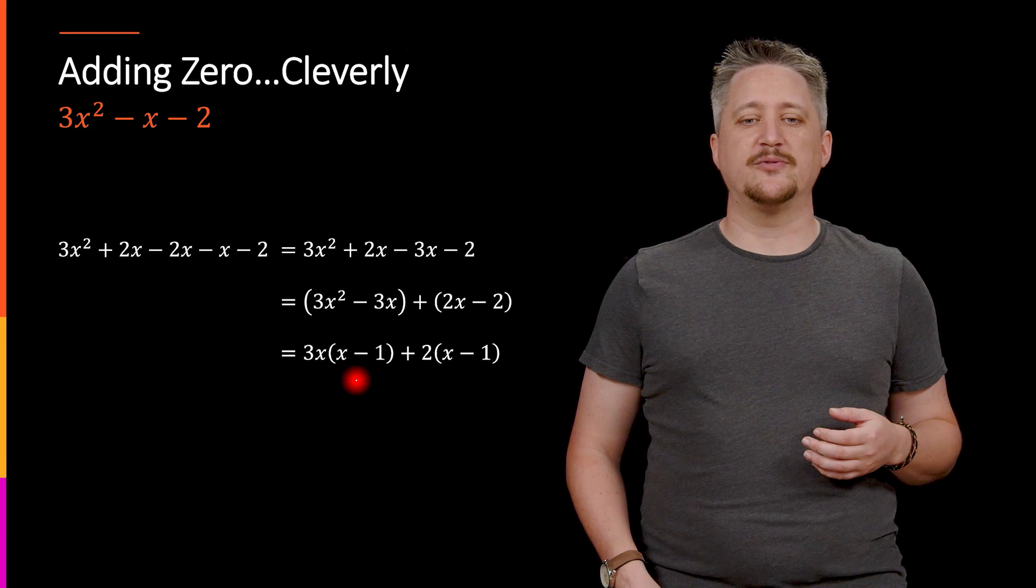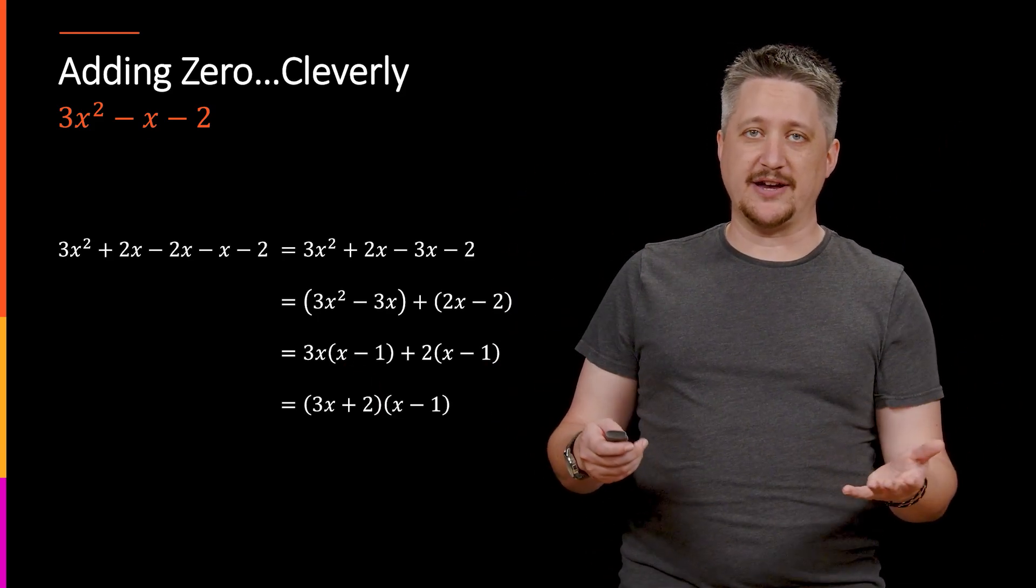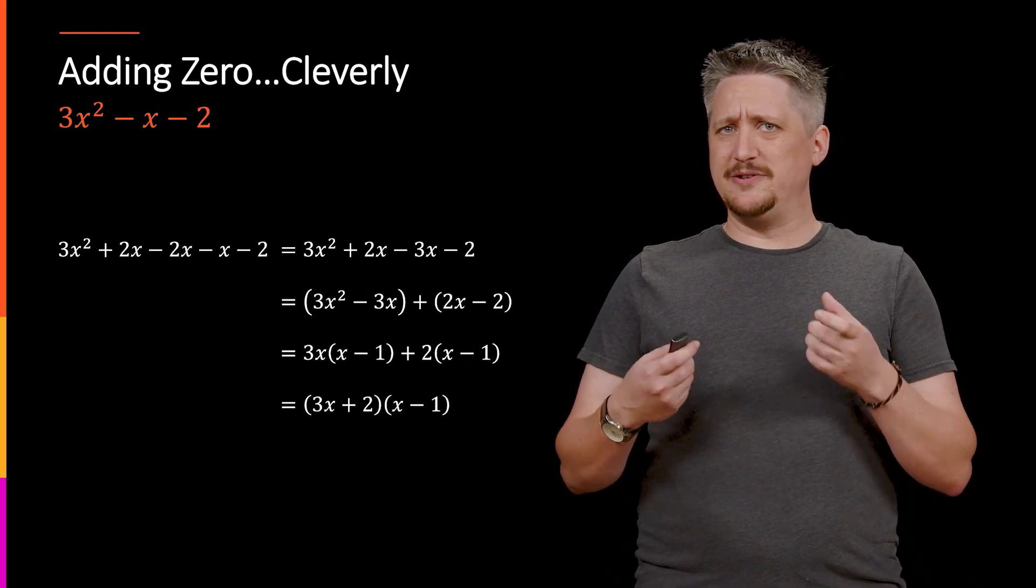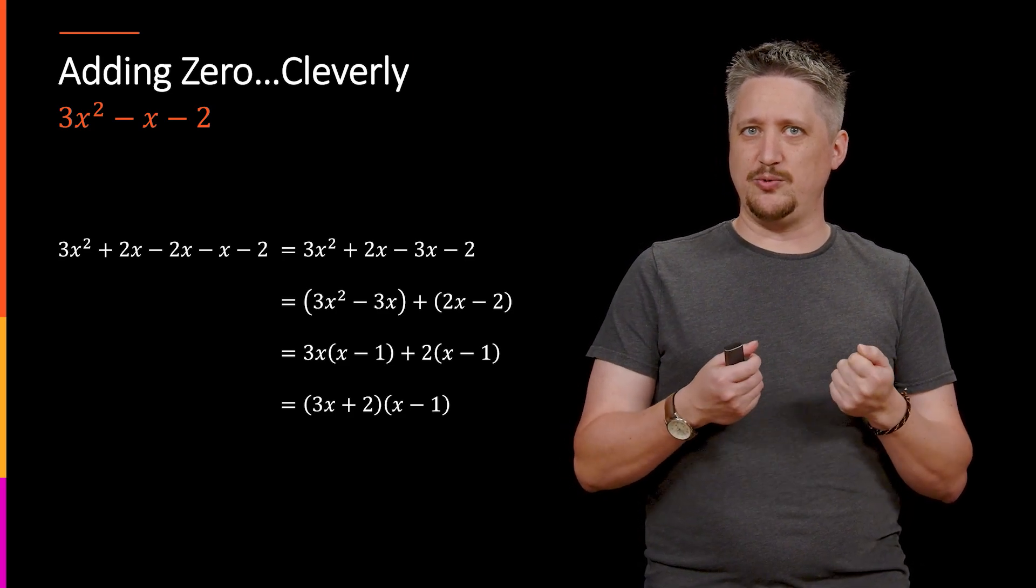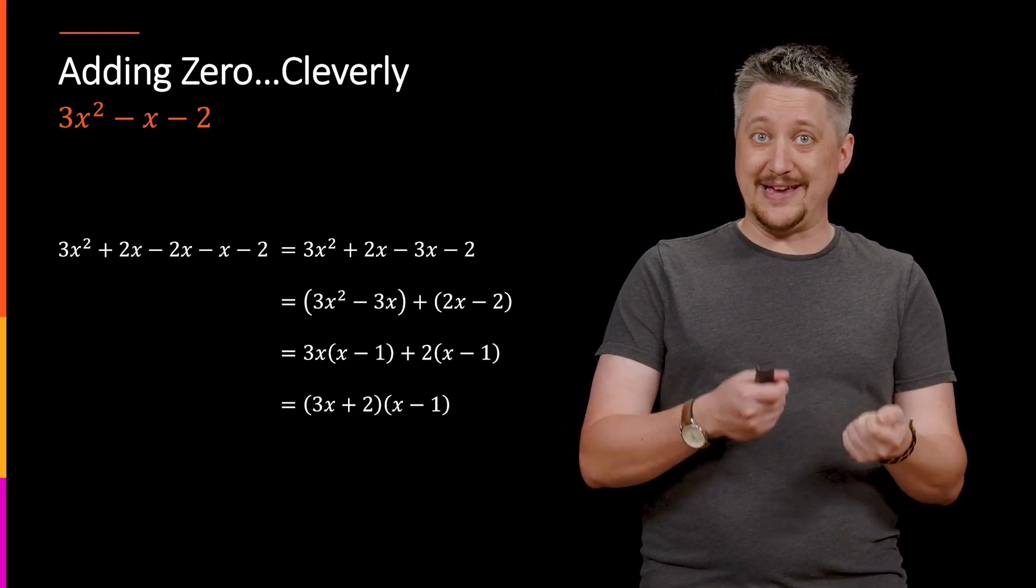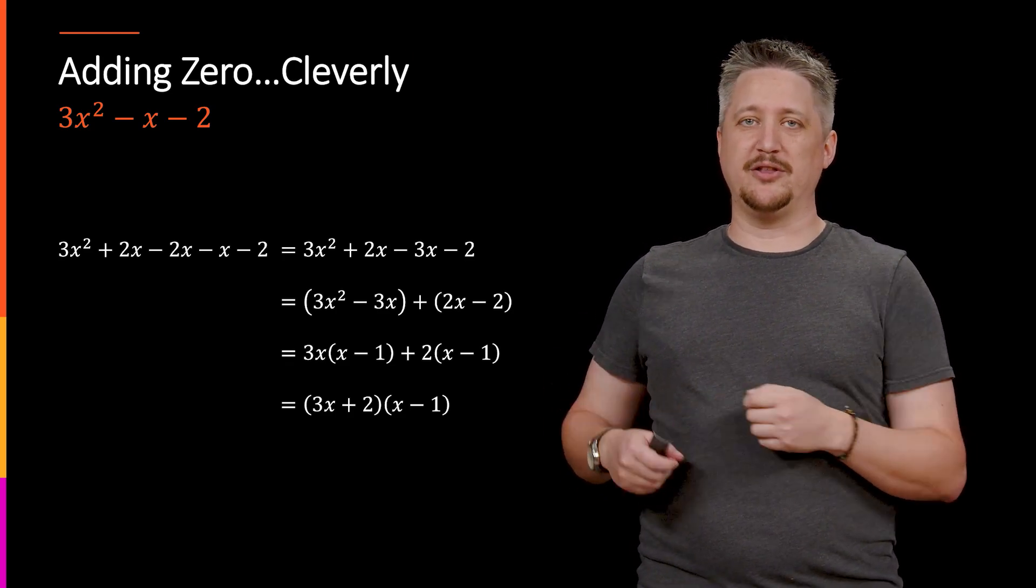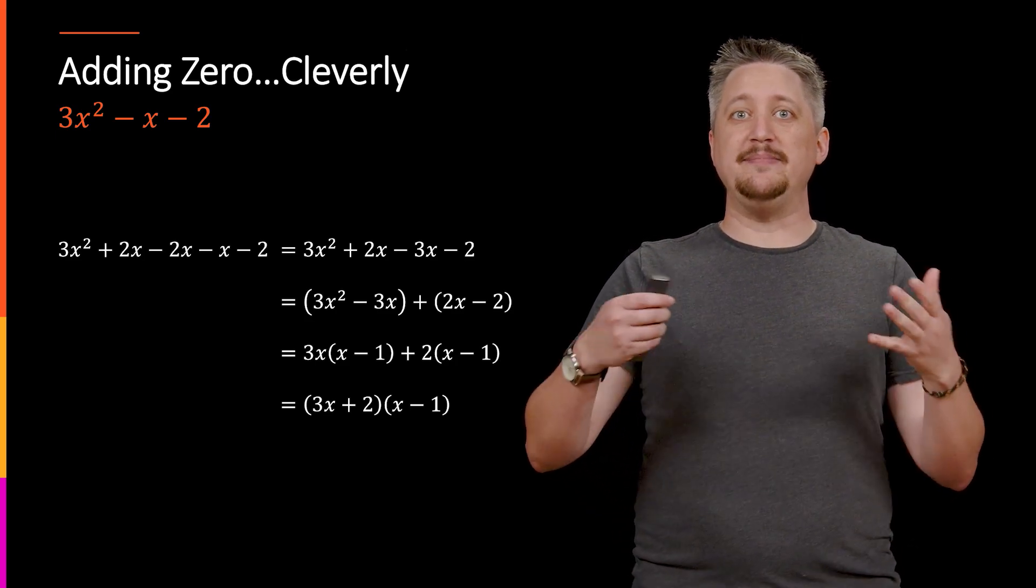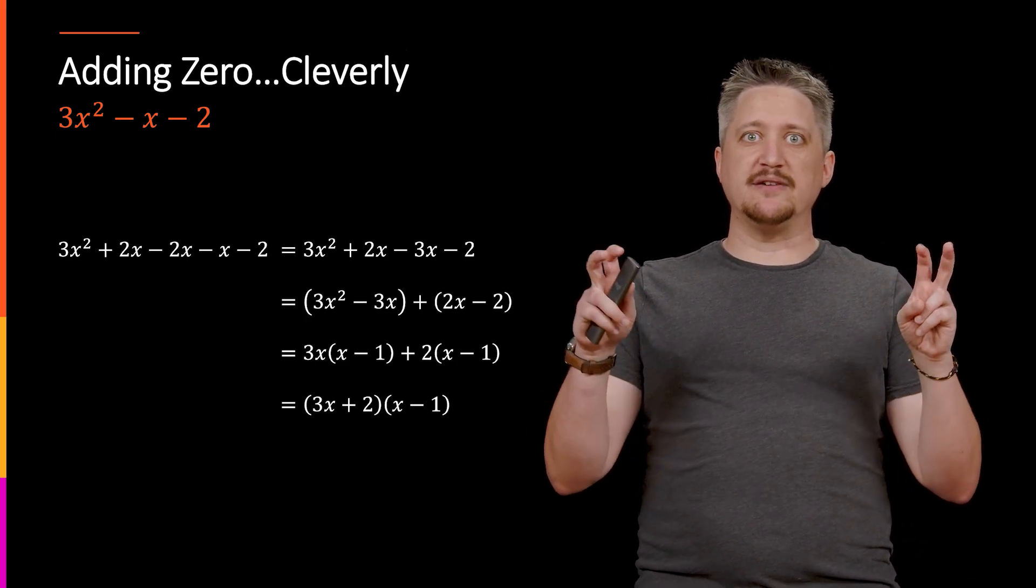I get the same thing on both sides. I have an x minus 1 and x minus 1. Pull that out. Abracadabra, I now have a factored thing. Again, to be very clear, this is not a thing that you need to do or understand how to do yet. This is a thing that we will cover in the polynomial section. This is just by way of example of what we mean when we say adding by 0 cleverly.